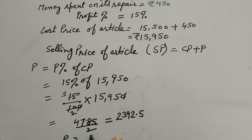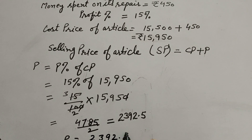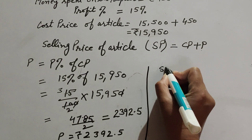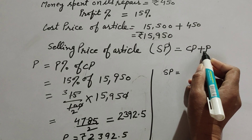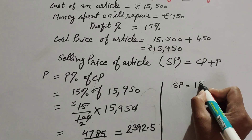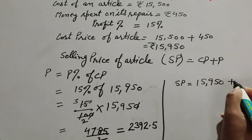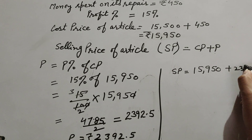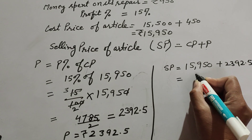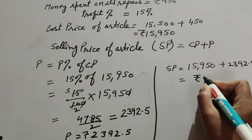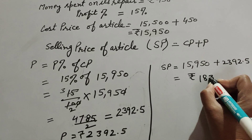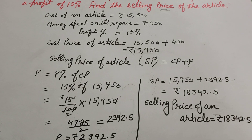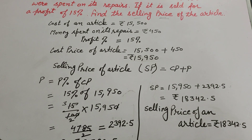So profit is equal to Rs 2,392.5. Now we find the selling price: Selling Price = Cost Price + Profit = Rs 15,950 + Rs 2,392.5 = Rs 18,342.5. So the selling price of the article is Rs 18,342.5.